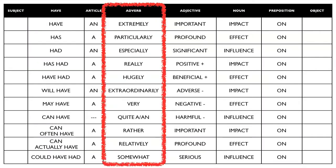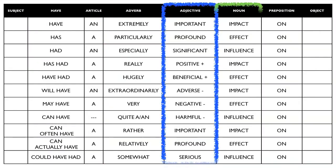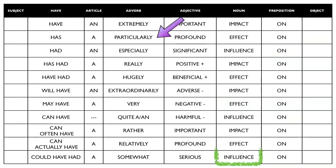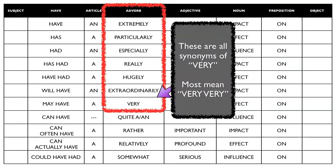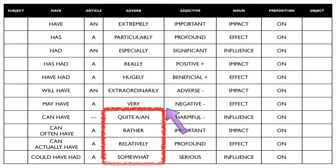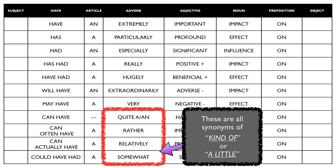Let's have a look at the adverb, adjective, noun combination. Firstly the adverbs. Extremely, particularly, especially, really, hugely, extraordinarily are all synonyms of very and most of them, apart from very itself, mean very, very. Quite, rather, relatively and somewhat, these are all synonyms of kind of or a little. Simple.